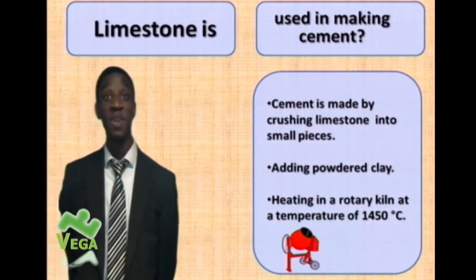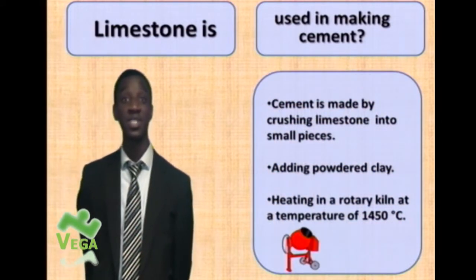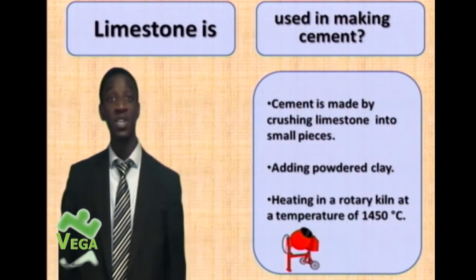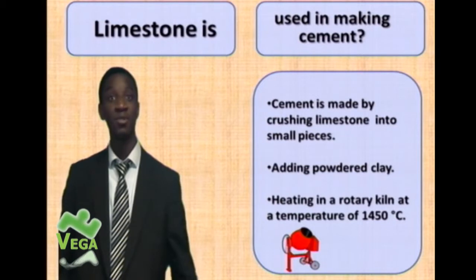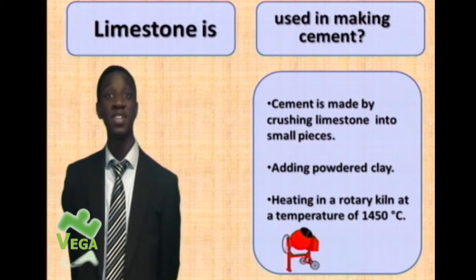In the rotary kiln — you may have seen this outside buildings where builders have been using it — this is how cement is made on an everyday basis.